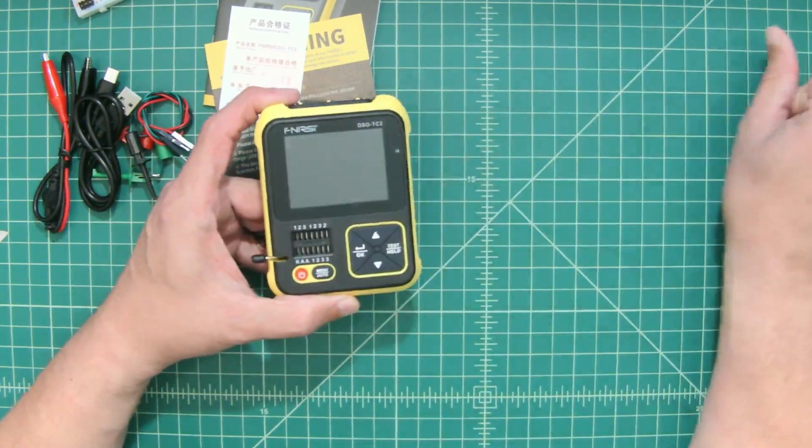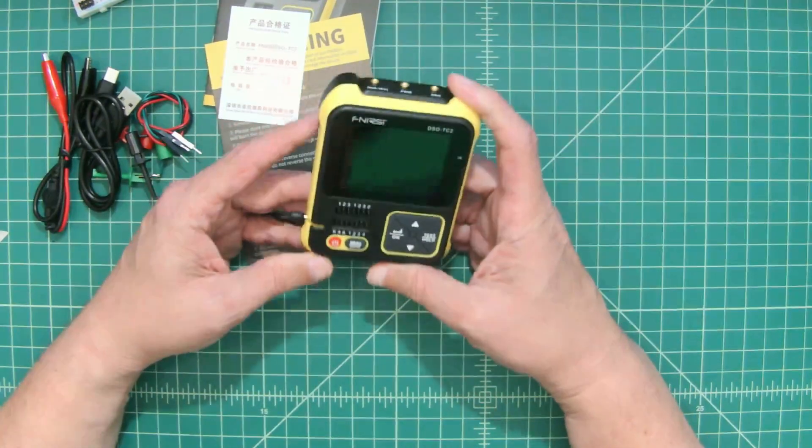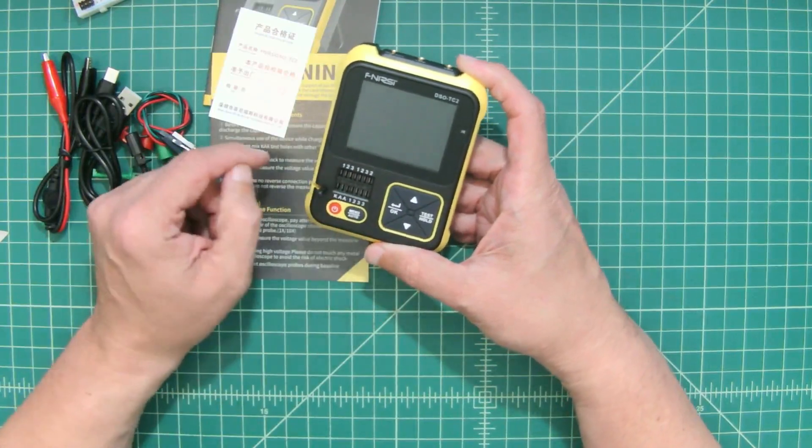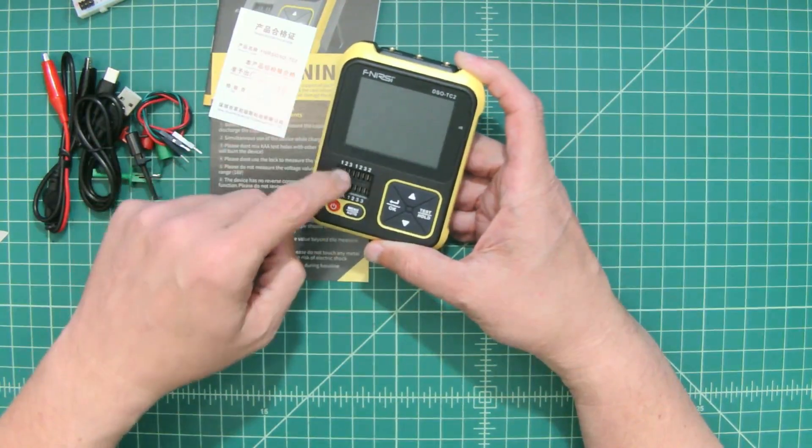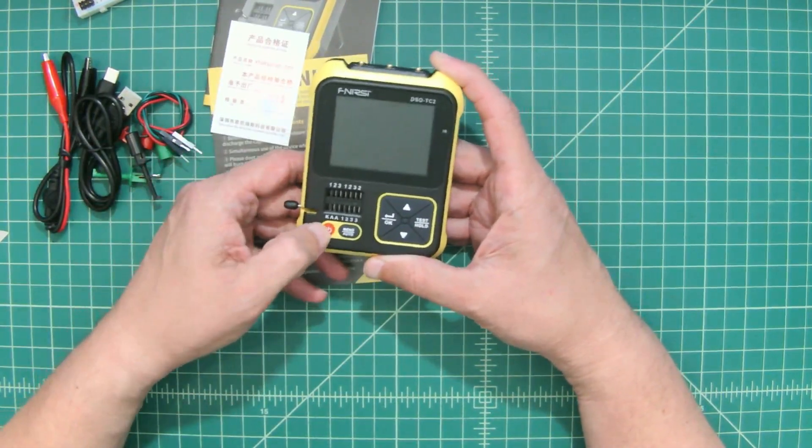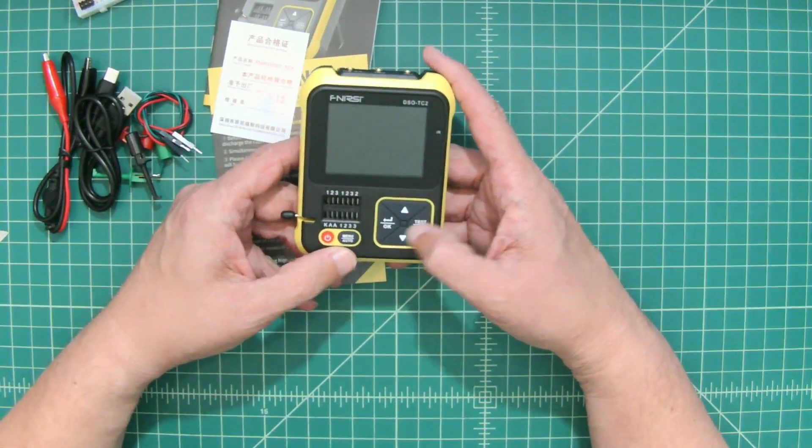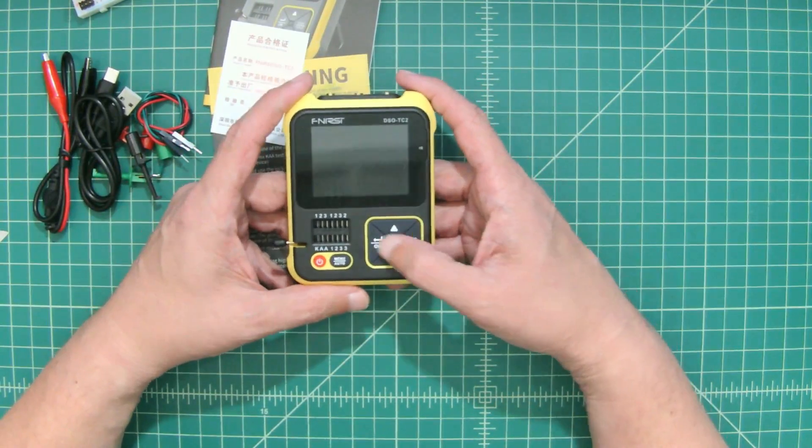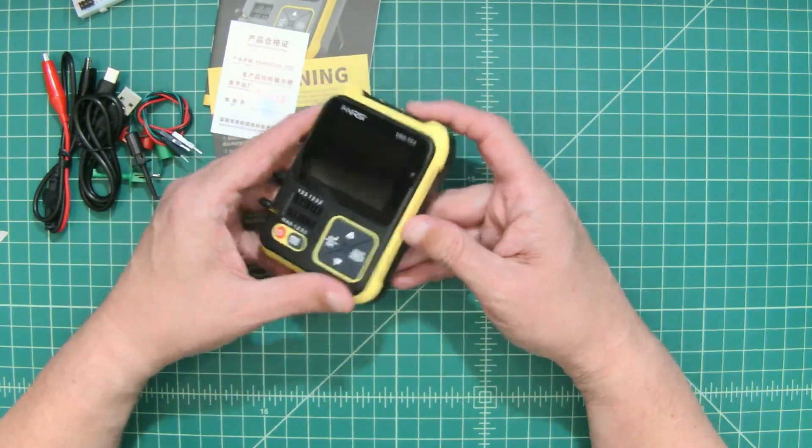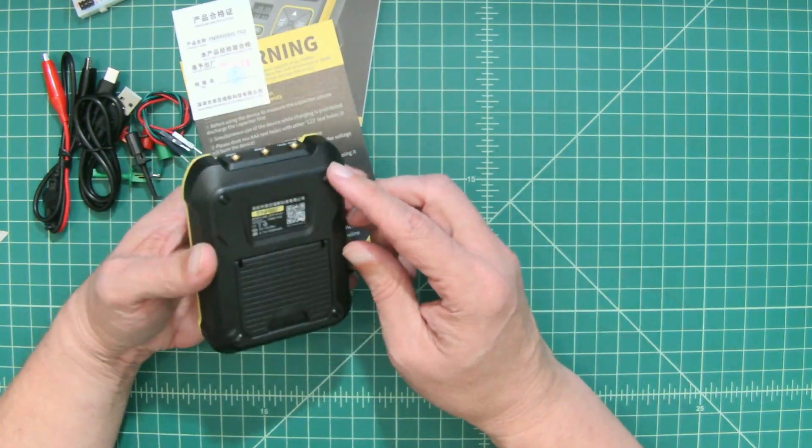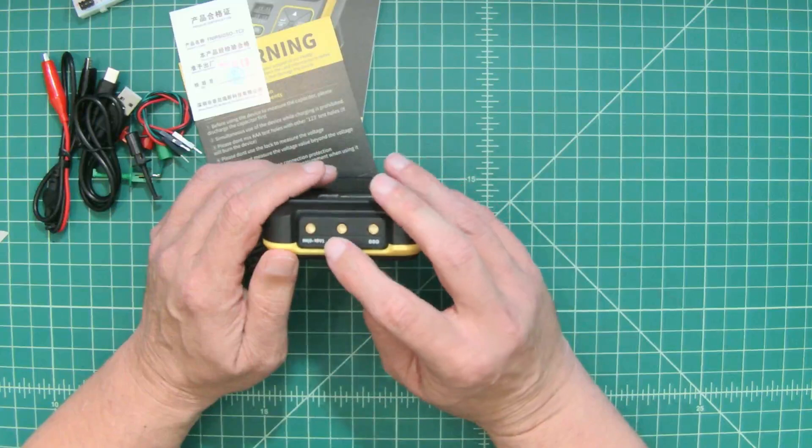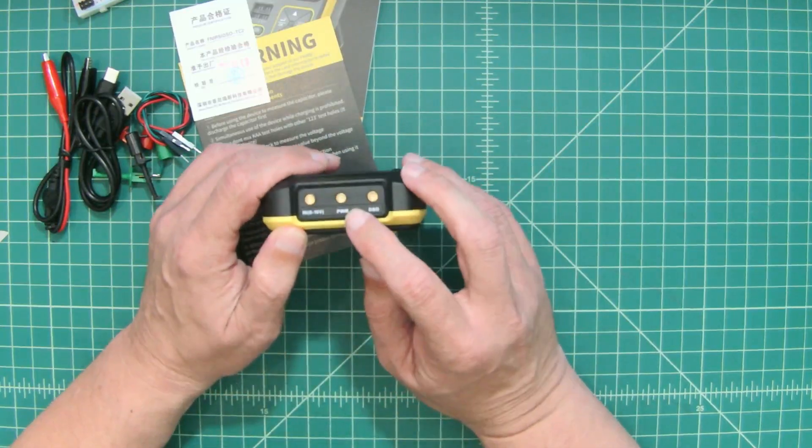This is much smaller than I expected it would be. It's actually really tiny. Here's your component tester and we'll run through this. You can put your components in here, lock them in place. It has power on and menu buttons, and a chevron that allows you to make different selections. Taking a look at the top of it,